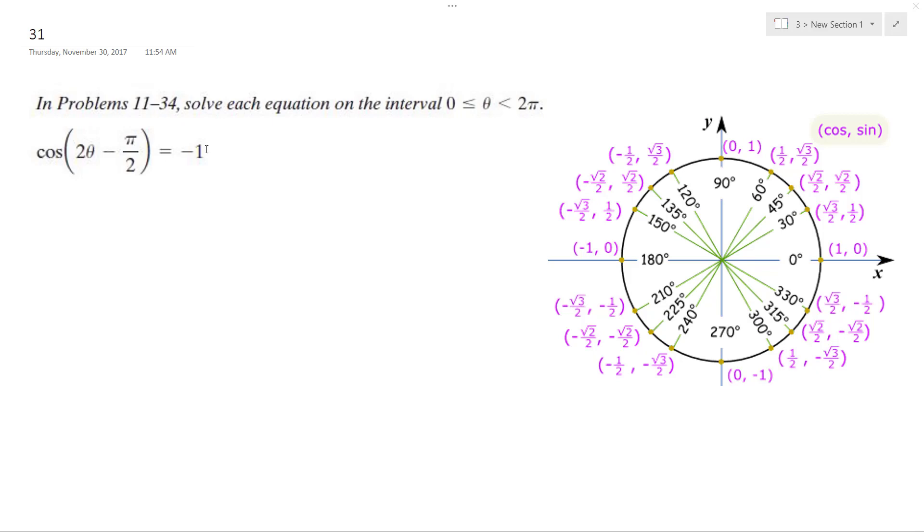Solving this problem, cosine 2 theta minus pi over 2, take the inverse cosine of both sides. So for this, I get 2 theta minus pi over 2 is equal to pi.